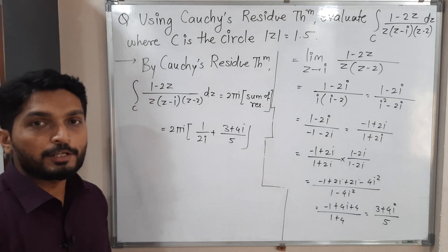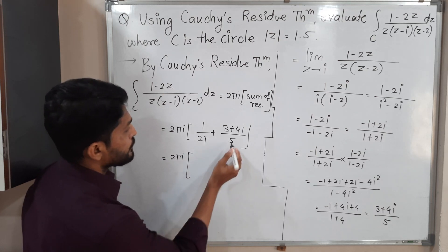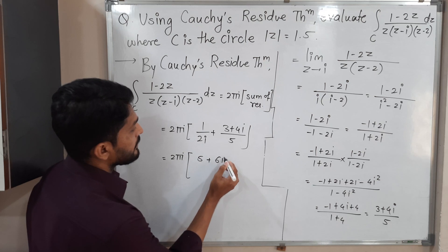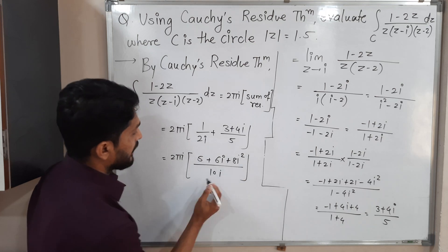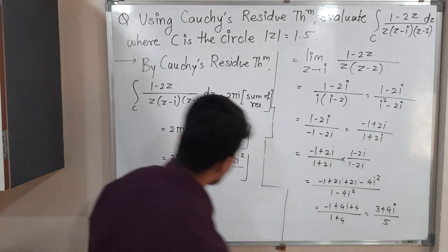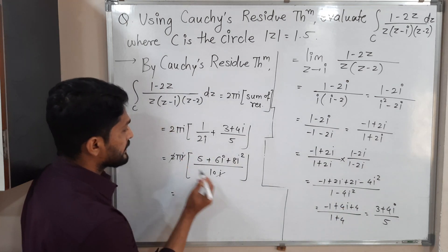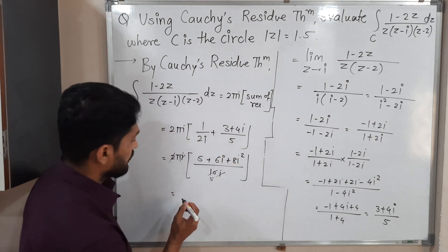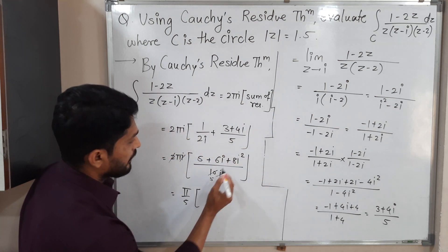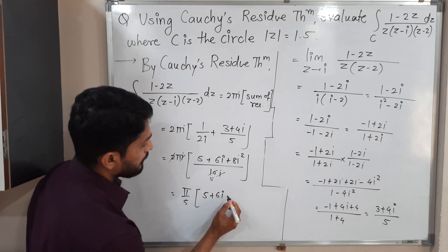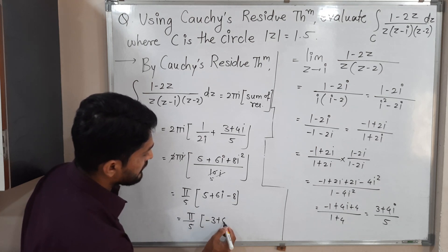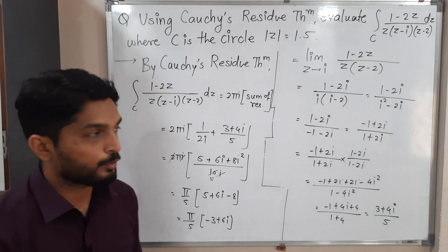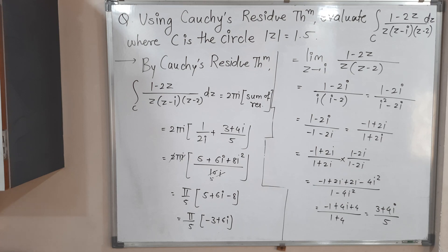Let us simplify. Cross-multiplying to add the residues: 5 times 1 is 5, plus 2i times (3 plus 4i) gives 6i plus 8i squared, all over 10i. Since i squared equals minus 1, the numerator becomes 5 plus 6i minus 8 equals minus 3 plus 6i. The 2πi times (1 upon 10i) simplifies: the 2i cancels, giving π upon 5. So the final answer is π over 5 times (minus 3 plus 6i). That is the required value of the integration calculated using Cauchy's residue theorem.